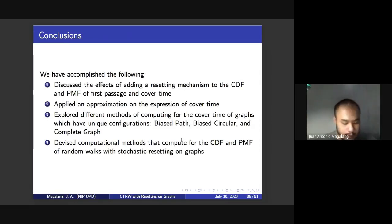So all in all, in my research, we have discussed the effects of adding a resetting mechanism to the CDF and PMF of first passage and cover time. As I've discussed quickly earlier, we've applied an approximation on the expression of cover time. And we've found alternative formulations for cover time for the biased path, biased circular and complete graph. And finally, we've devised computational methods that will compute for the CDF or cumulative distribution function and probability mass function of random walks with stochastic resetting on the graph. So we've made a method that would accommodate an increasing amount of nodes. But of course, again, without using the approximation, this would become more and more inefficient.